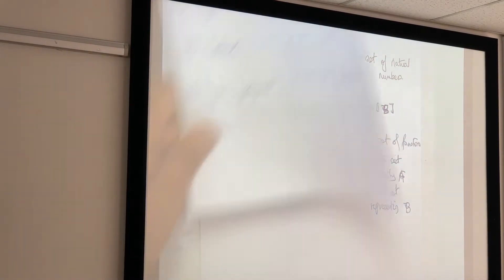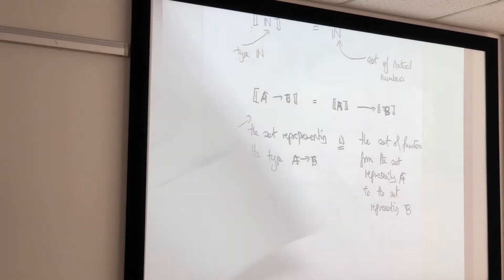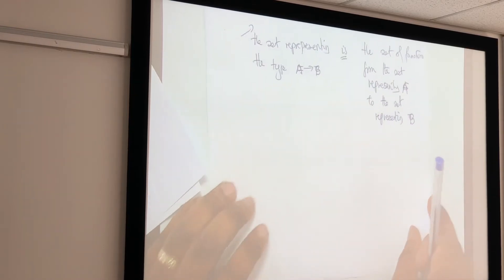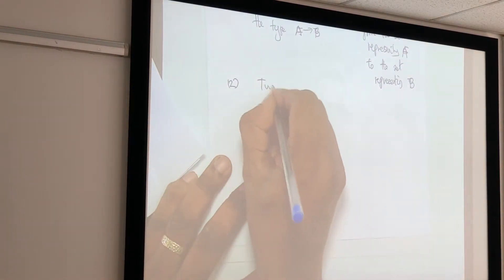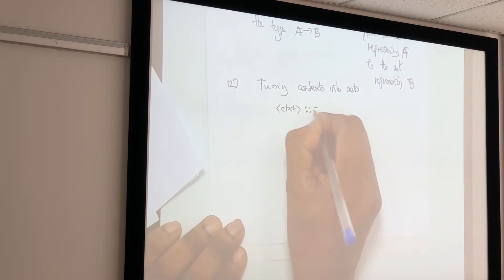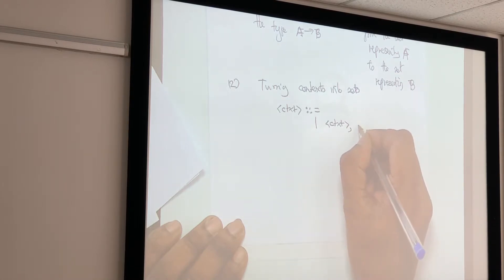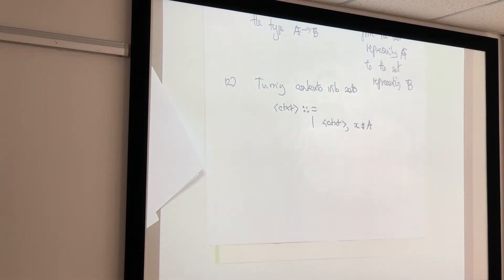So I've explained how to turn types into sets. The next thing is to turn contexts into sets. Recall the definition: contexts are either empty, or a context G followed by a comma, a variable x, colon, and a type A. So I'm going to have to turn all of those contexts into sets.